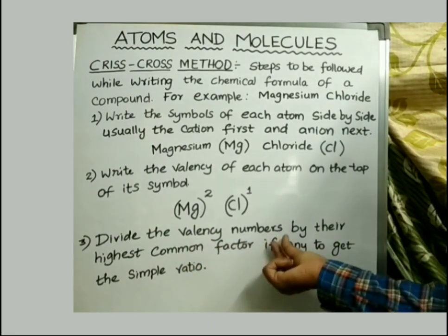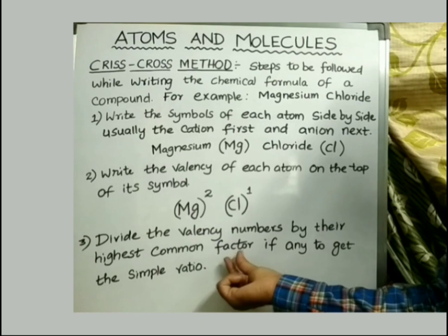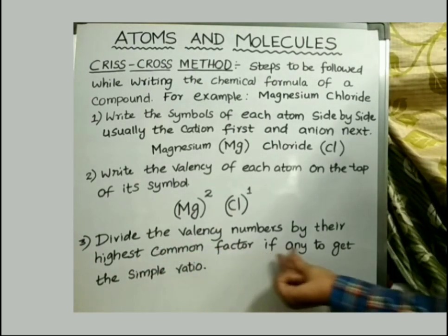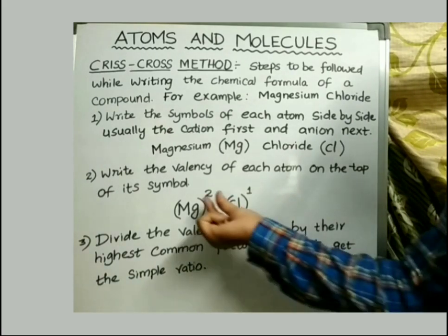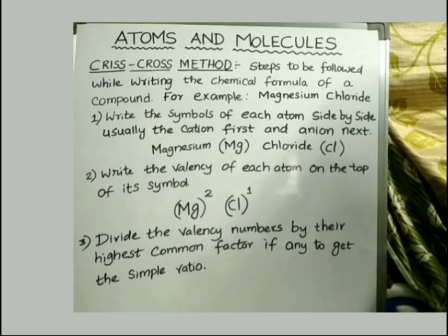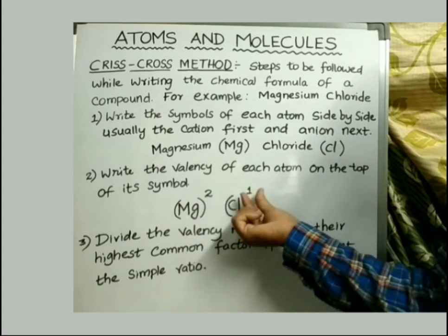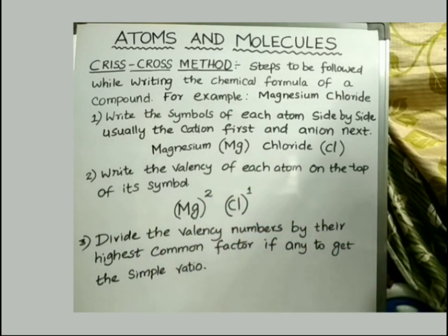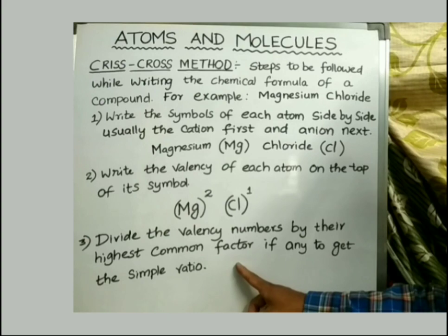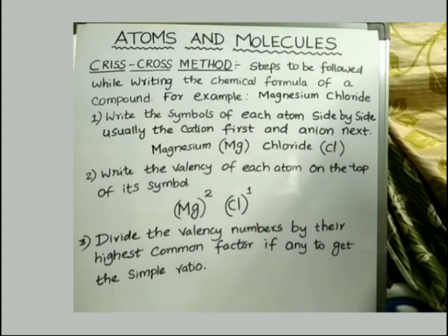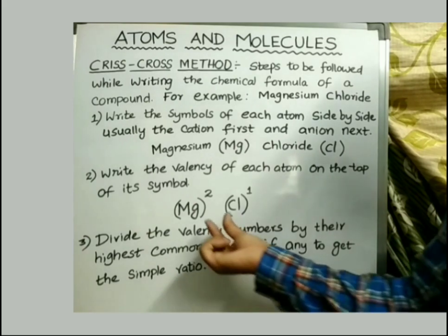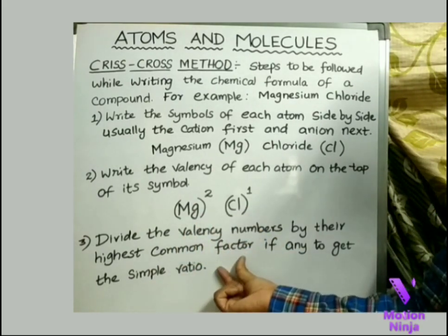Step 3: divide the valency numbers by their highest common factor, if any, to get the simple ratio. In this case, 2 and 1 are the valencies and we need not divide these numbers by the highest common factor, because 2 and 1 are already in simple ratio — there are no common factors. So Step 3 can be excluded for magnesium chloride.